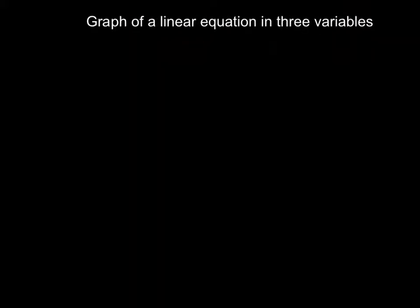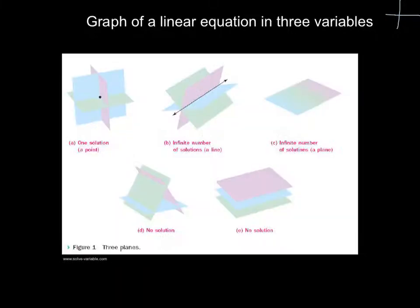For the graph of a linear equation in three variables — normally with two variables we just have x and y planes — if we think about that in 3D terms, we have two intersecting planes. Since we have three equations, we now have three intersecting planes. One solution would look like three intersecting planes: one in blue, two in pink, and the third in green. They all intersect at exactly one point, which would be a system with one solution.